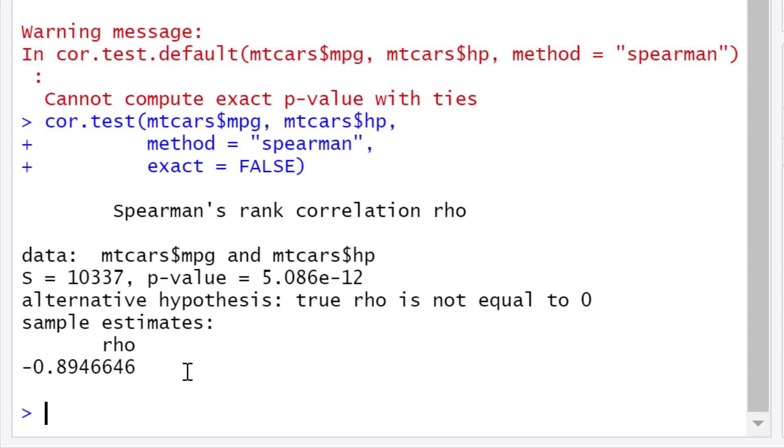We can also see here that the p-value is 5.086 times 10 to the negative 12. If I set my alpha level to 0.05, since this p-value is considerably lower than my alpha level, I will reject my null hypothesis and accept the alternative hypothesis. In other words, in this example, there is a significant negative correlation between the mpg and horsepower variables of the cars.